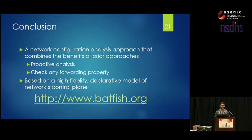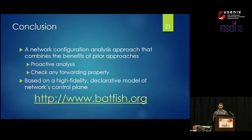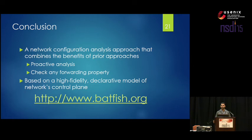We found a number of interesting bugs. To conclude: the benefits of our approach are that we provide proactive analysis while still being able to check any forwarding property. We found bugs in two major university networks, many of which were fixed. We did this using a high-fidelity declarative model for the control plane, showing that low-level configs can be mapped to such models. These models also have other use cases — since you have the data plane of the network, you could potentially use it to transition to SDN by taking that data plane and distributing it to switches. Batfish is a real tool available at batfish.org.